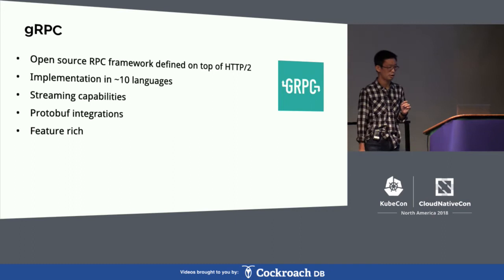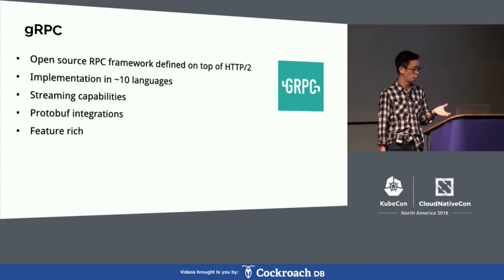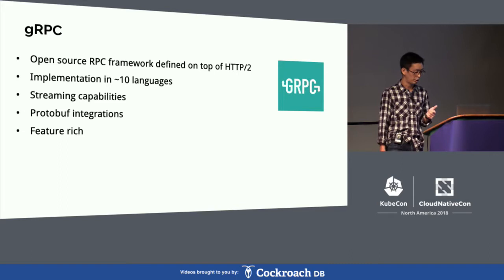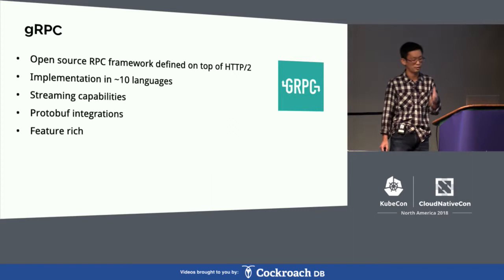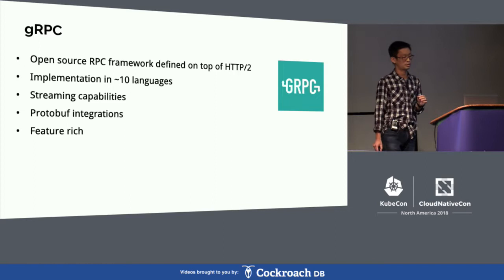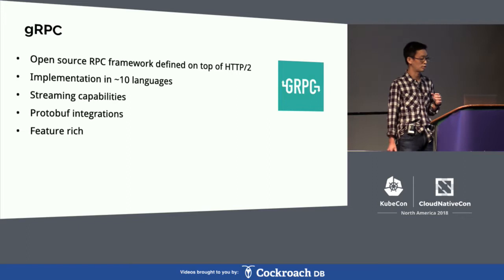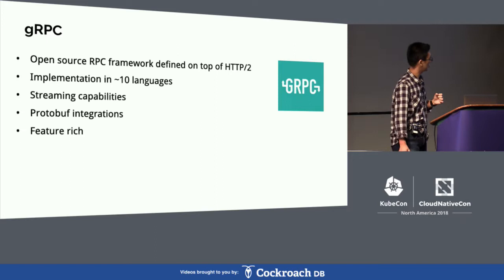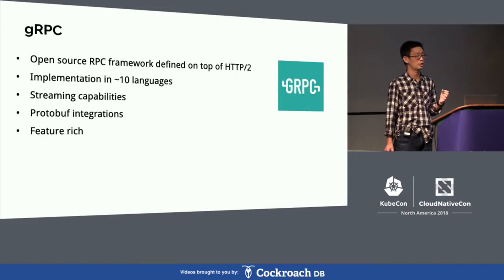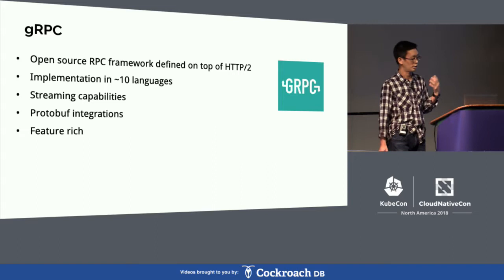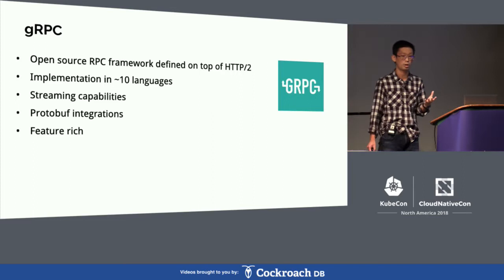GRPC is an open-source RPC framework defined on top of HTTP2. It's implemented in approximately 10 languages by now — Java, Go, C++, PHP, Ruby, C#, and more. One major feature is that you can do streaming with GRPC. There's good protobuf integration. It's feature-rich — we have load balancing, you can plug in your own DNS server, deadlines, retries, and all the good stuff.